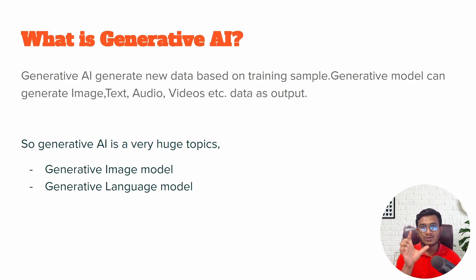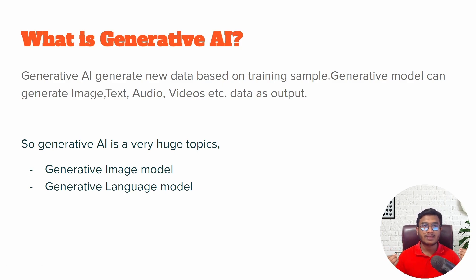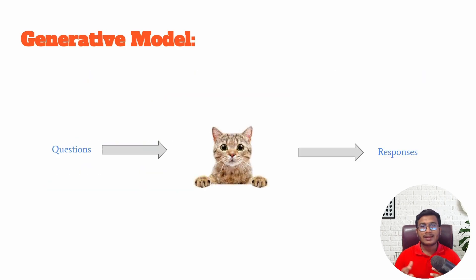There are many APIs available — even Google has an API that lets you convert speech to text. With speech-to-text, you can easily convert any kind of audio to textual representation. So in summary, Generative AI generates new data based on the training samples you give, and a generative model can generate any kinds of output — whether it's images, text, or audio.